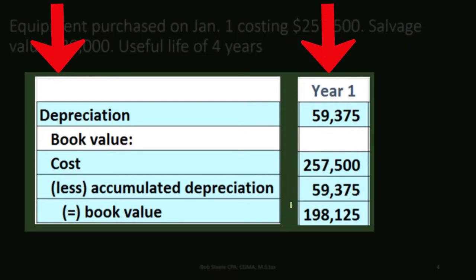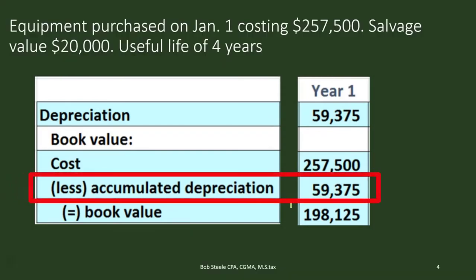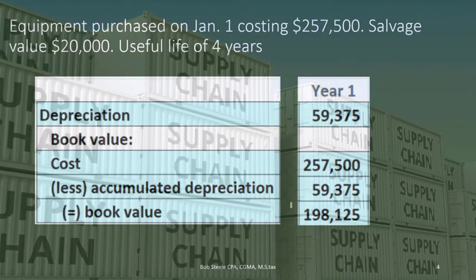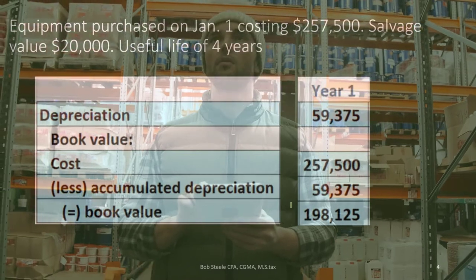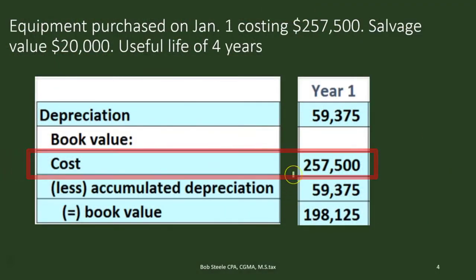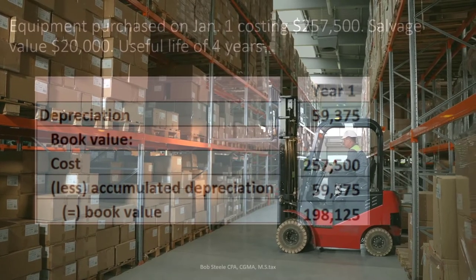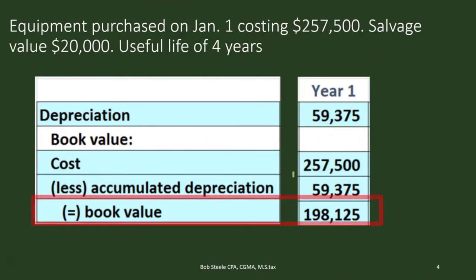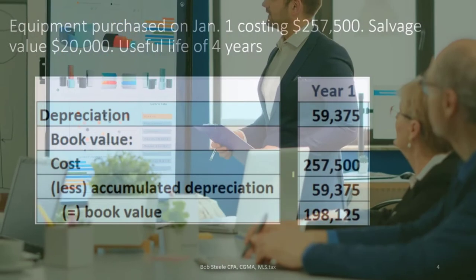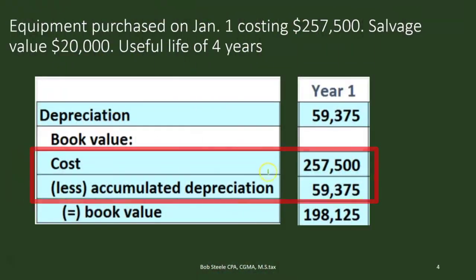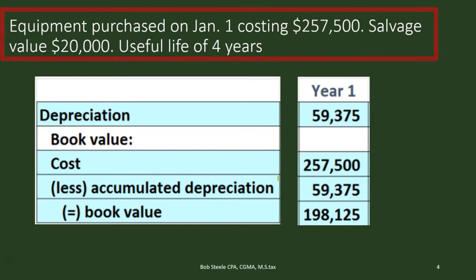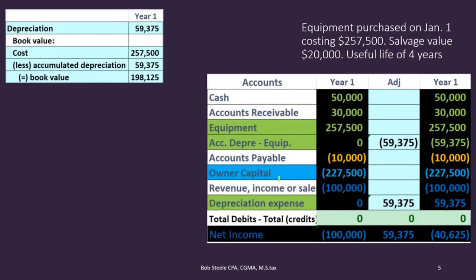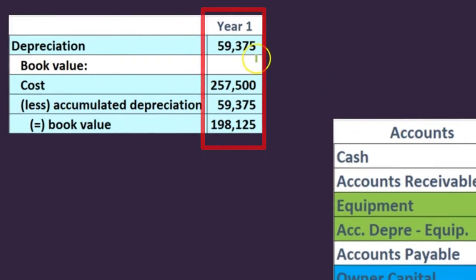Notice what we are not doing: we're not just writing down the equipment itself. We are making a new account called accumulated depreciation. Unlike supplies, where we can see the physical deterioration, with equipment we know it's an estimate — that same forklift is still there after we wrote it down. We're telling the reader: this is what I paid for it, and this is what it's gone down by in accordance with the estimate, using straight line over four years with a $20,000 salvage value.